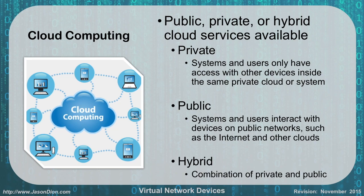Then we have overall cloud computing. Everybody hears about the cloud nowadays, but we have lots of different types. There are public clouds, private clouds, and hybrid clouds available. A private cloud is a system where only the system and its users have access to devices in that same private cloud. For example, a government agency that has put data into the cloud but only that agency has access — that would be a private cloud.